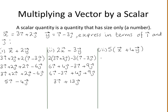For part 3, you'll have to find what's in the brackets first before multiplying by the 5. Filling in for vector x and then filling in for vector y.